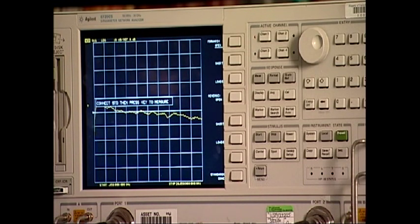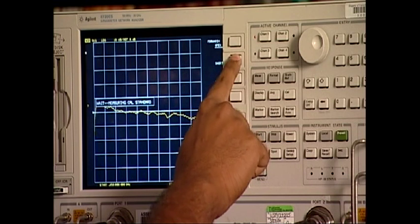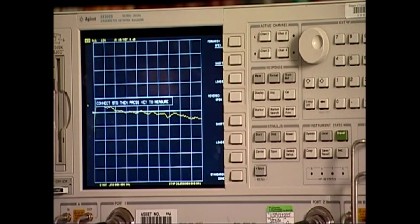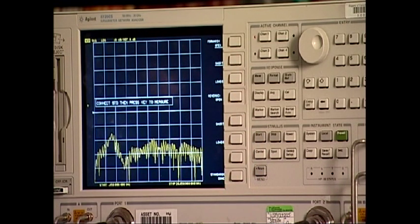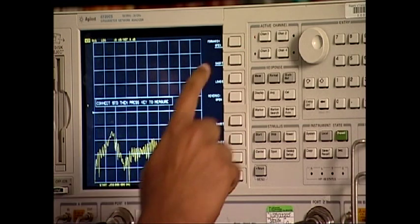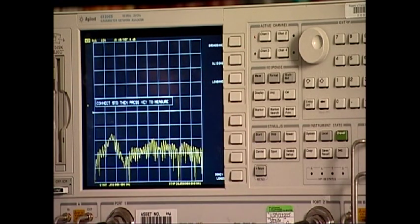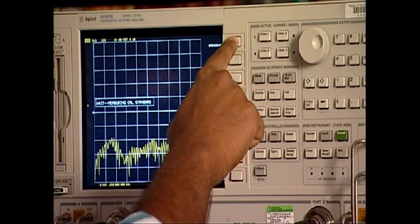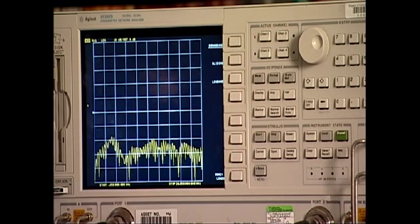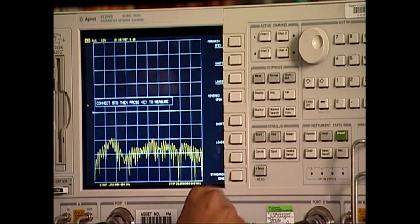Next, we connect the short standard to the cable at port 1 and select short. Next, we connect the load standard to the cable at port 1 and select loads. Now here, since the load we're using is a broadband load, we select broadband. Once this is done, we select done loads.